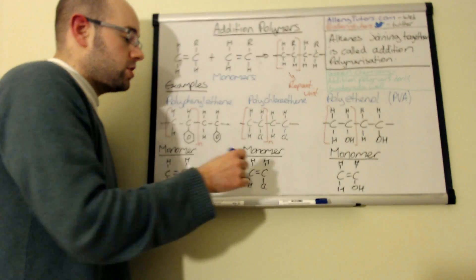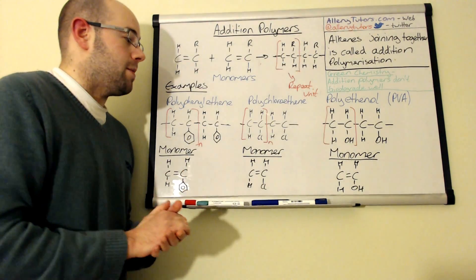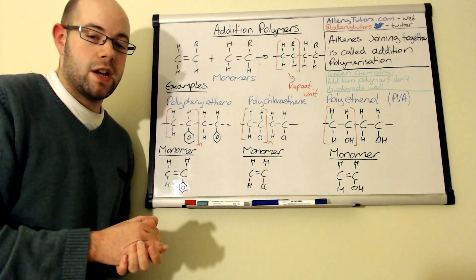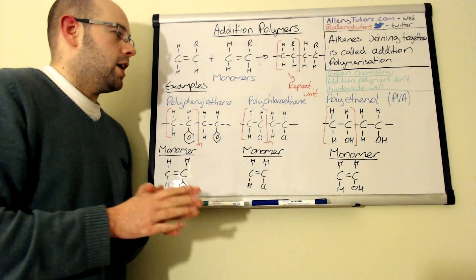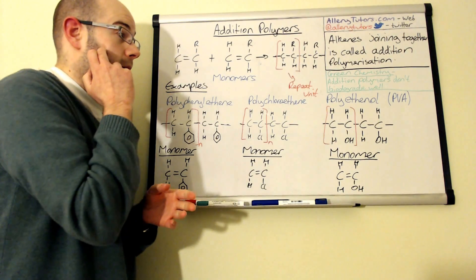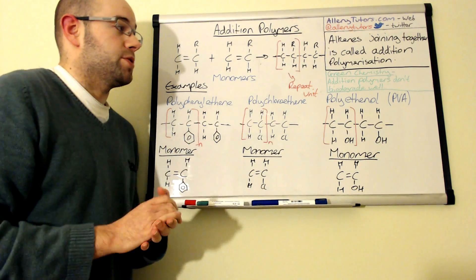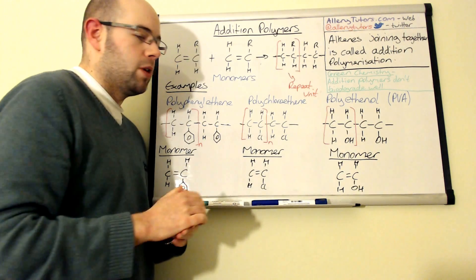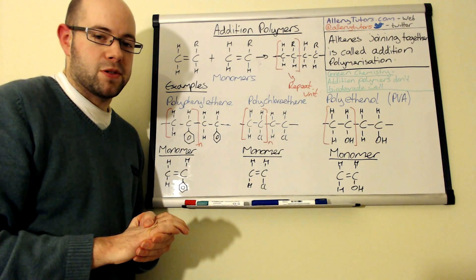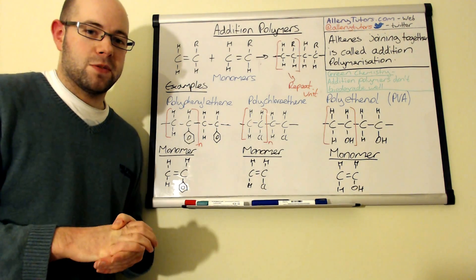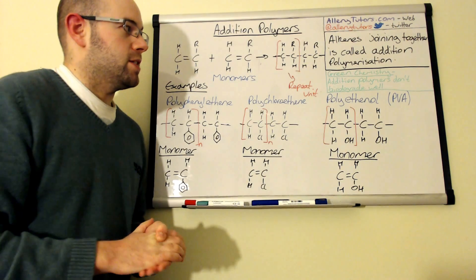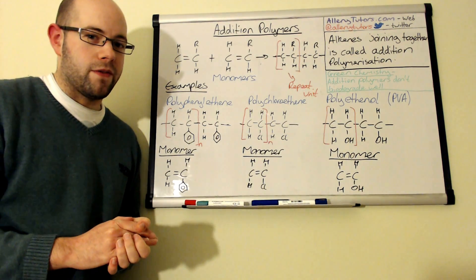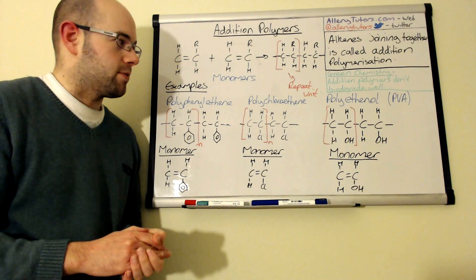Just finally to look at the green chemistry, these things, generally these addition polymers they're really difficult to break down. They're really useful, with the exception of PVA, most of these ones are really difficult to biodegrade mainly because of the non-polar carbon carbon bond in between them. Things like enzymes struggle to break these types of plastics down. So in terms of a green chemistry point of view they're not very good.